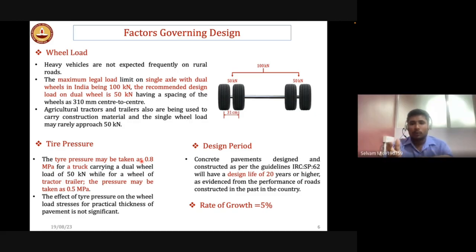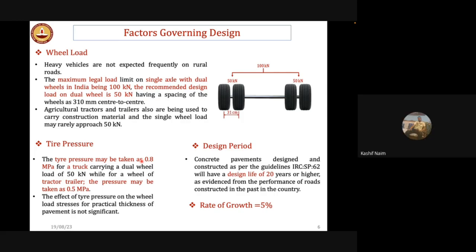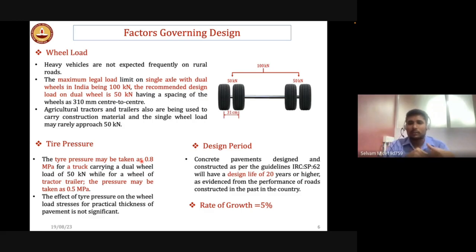The design period is usually 20 years or higher. The rate of traffic growth is assumed at 5% per year over the design period — lesser than the 7.5% assumed in rigid pavement design for PQC. We assume that in rural roads the traffic growth is very less, which is why we use a 5% incremental rate.